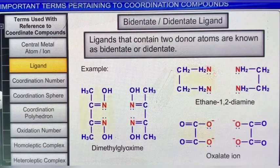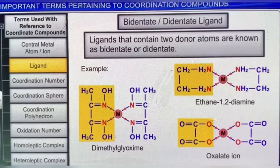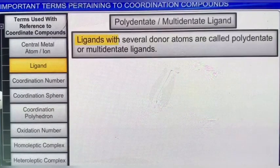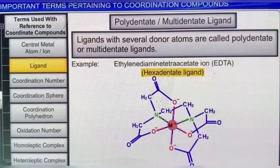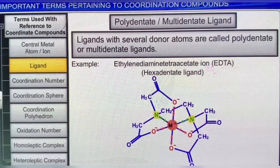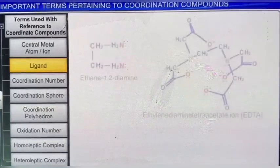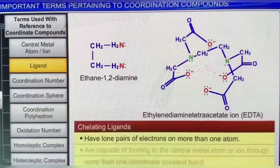Ligands with several donor atoms are called polydentate or multidentate ligands. A classic example of a polydentate ligand is the hexadentate ligand ethylenediamine tetraacetate ion, EDTA. You can see from its structure that it binds to the central metal ion through two nitrogen and four oxygen atoms. Ligands like ethylenediamine and EDTA, which have lone pairs of electrons on more than one atom, are capable of binding to the central metal atom or ion through more than one coordinate covalent bond. Such ligands are called chelating ligands.